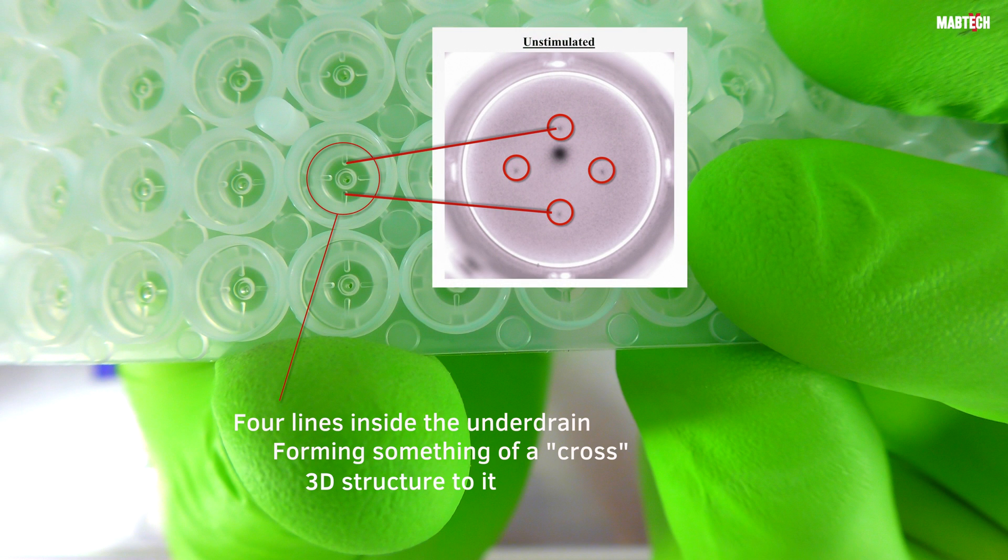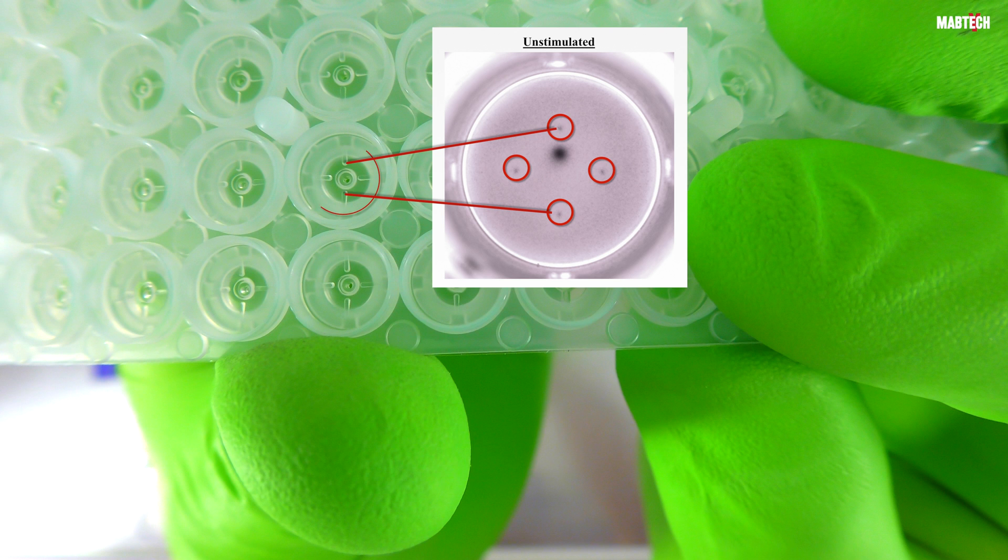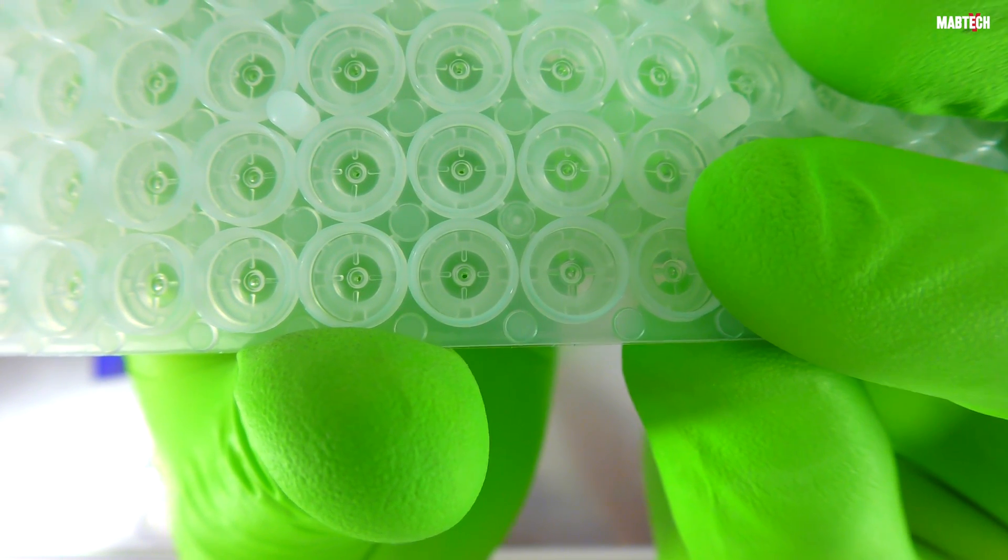The highest points of the cross coincide with the placement of the membrane artifacts shown earlier. In essence, this is the point of contact between the underdrain and the PVDF membrane if the plate is handled incorrectly somewhere during the assay.